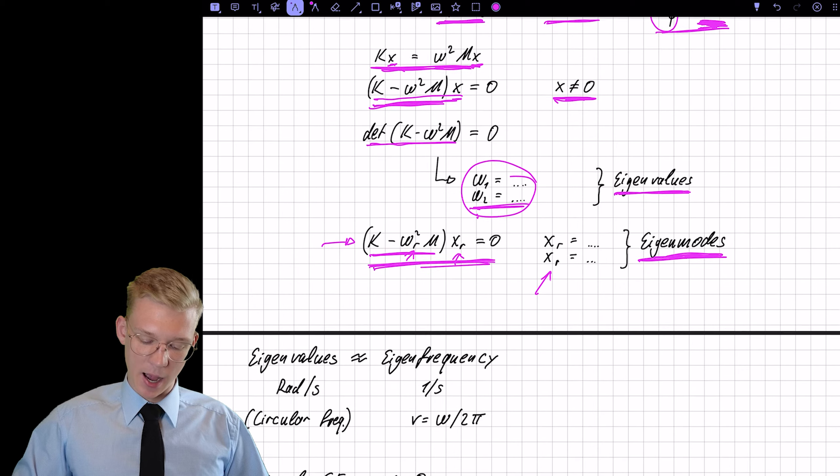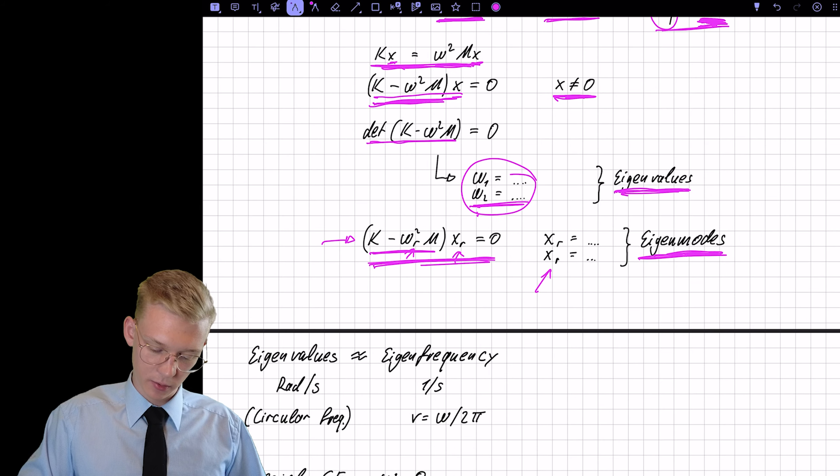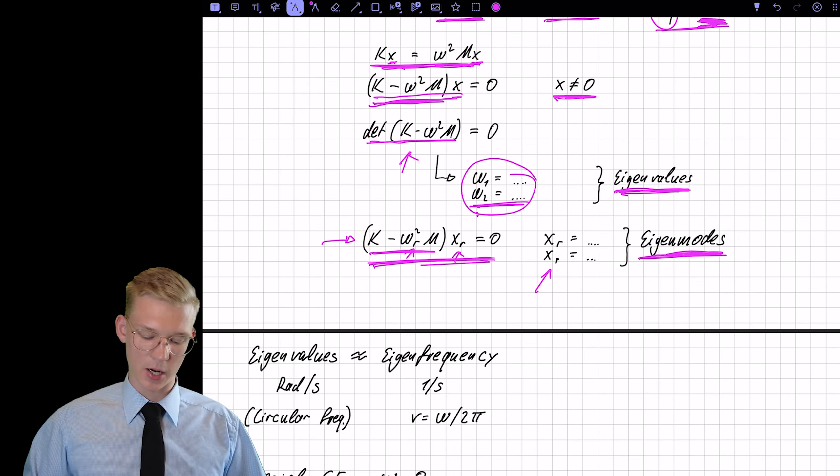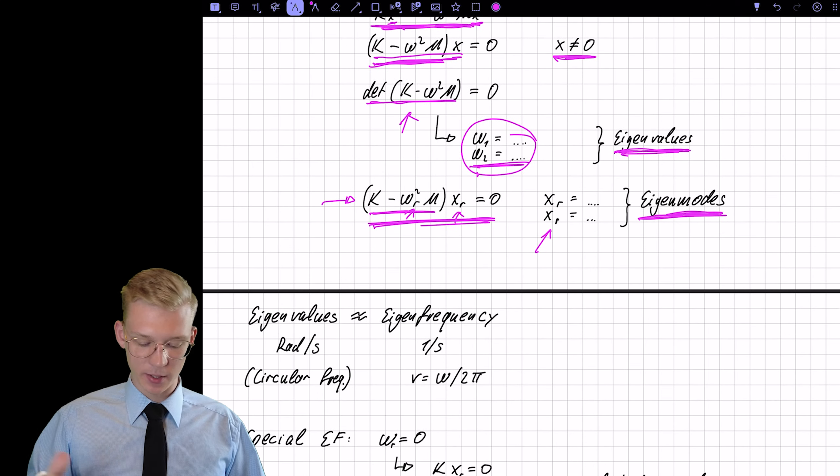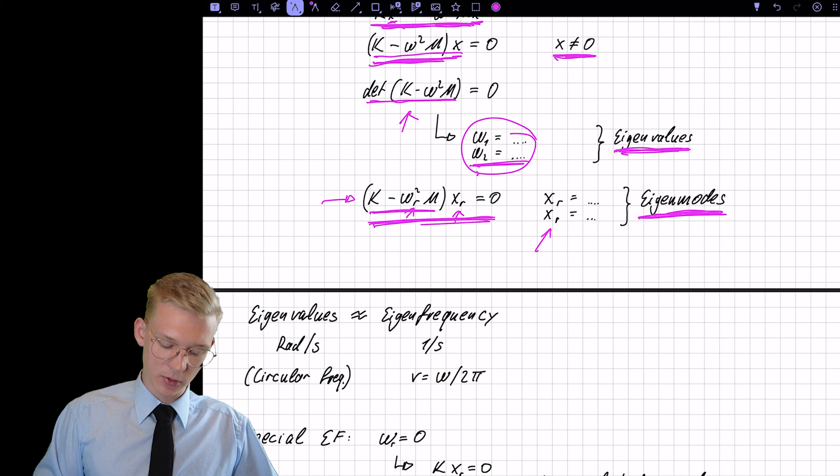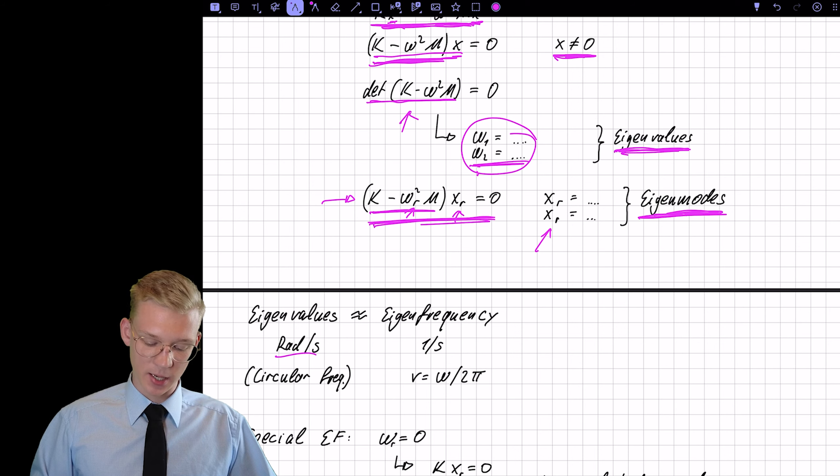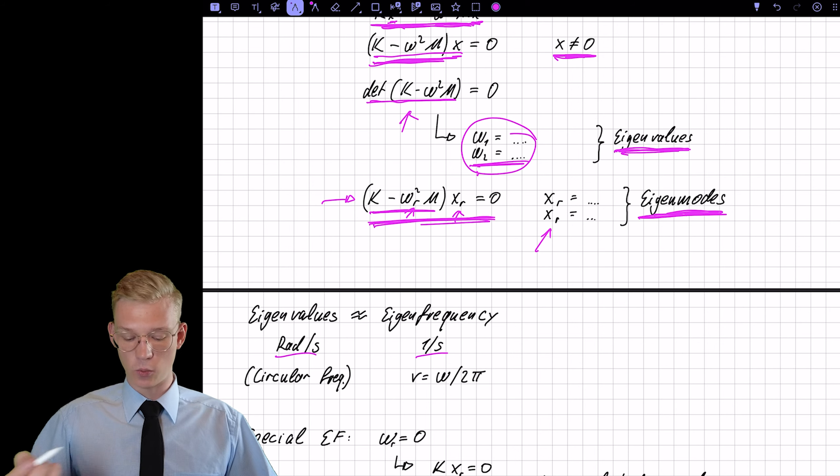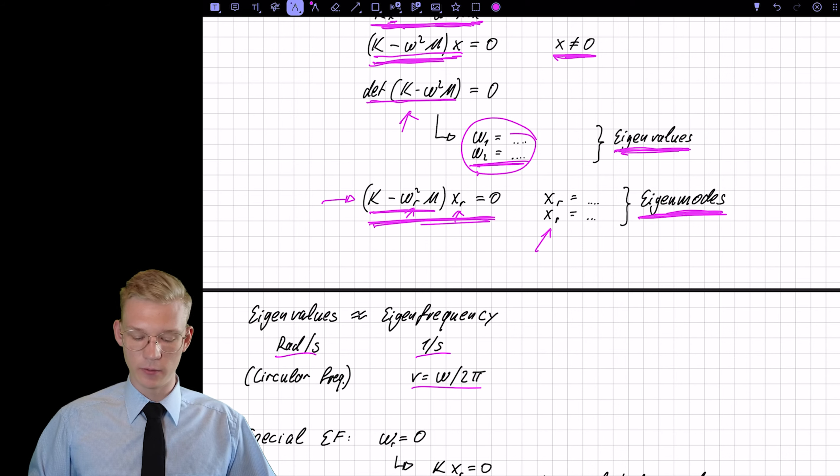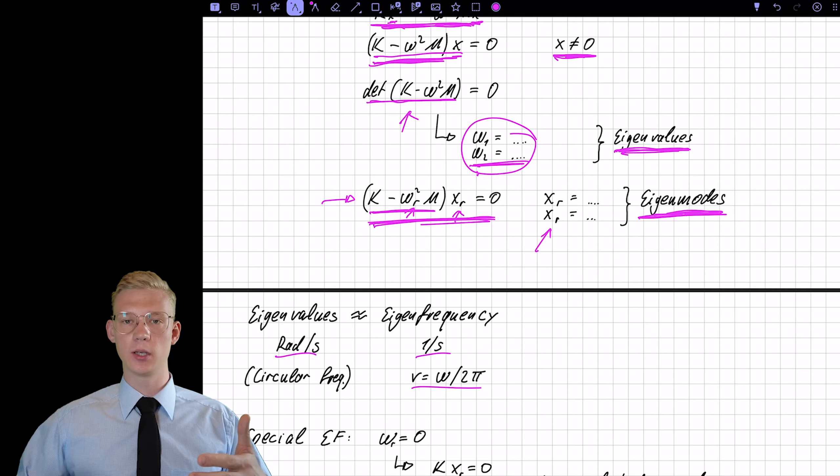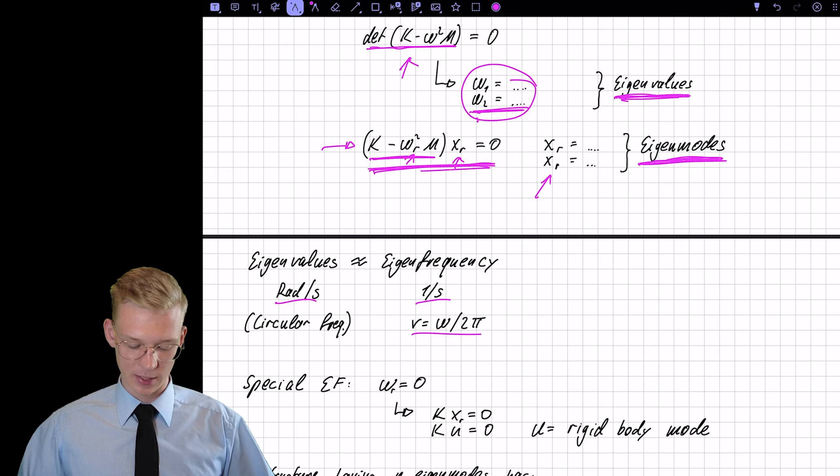Now, are those eigenvalues that we found here actually our eigenfrequency? Well, not really, but close enough because the eigenvalues that we found are in radians per second, but the frequency is 1 per second. So to get the frequency, you just have to divide by 2 pi, but we will continue working with that as if it is our eigenfrequency.